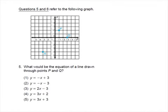What would be the equation of a line drawn through points P and Q? I can see points P and Q on my graph. I can't see exactly where it crosses the y-axis, but based on the points they gave me, I could find the slope of the line.